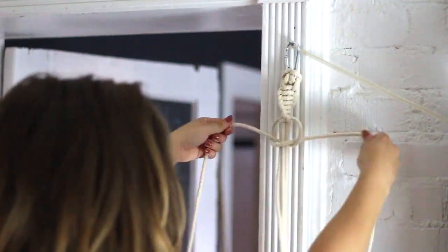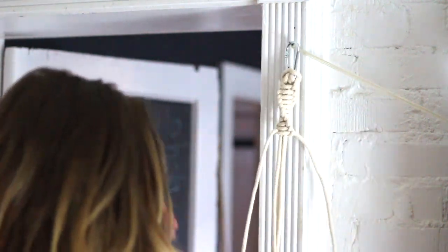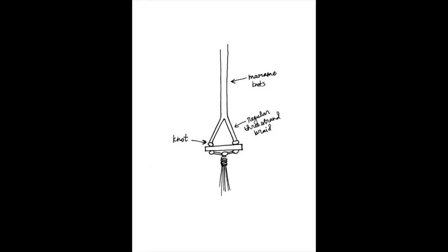When you get to about 8 inches away from the length you need, stop tying knots and split the ropes into two groups. Braid each group with a regular 3-strand braid and then tie a knot at the end of each.